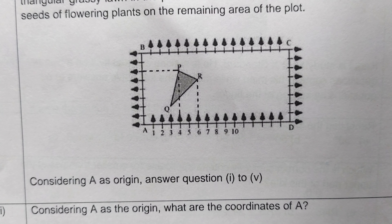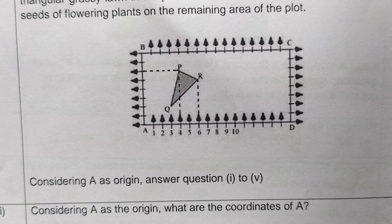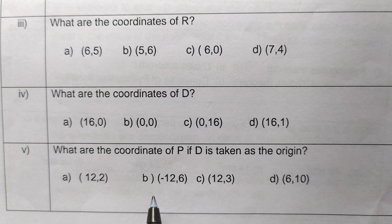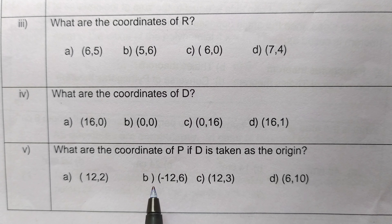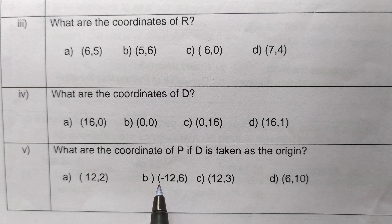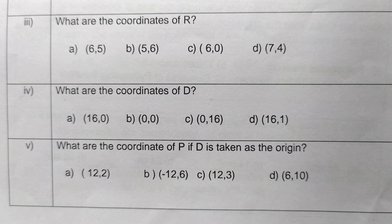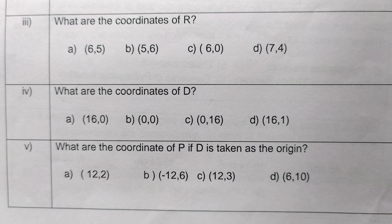Therefore the coordinates of P when D is the origin become (-12, 6). Option B is the correct answer: minus twelve comma six. This is how we solve this problem. Thank you.